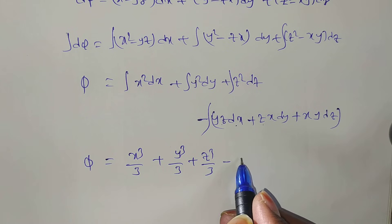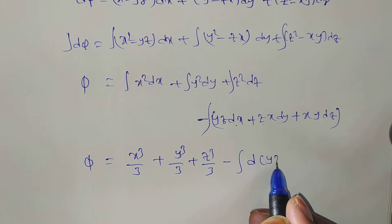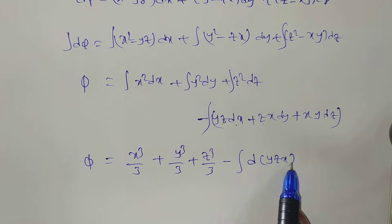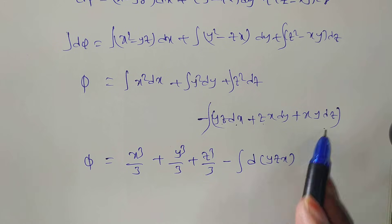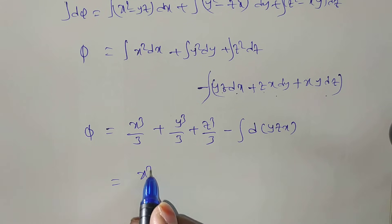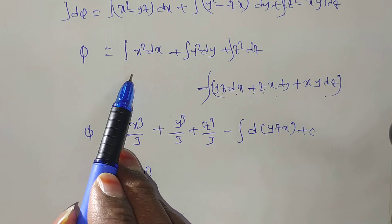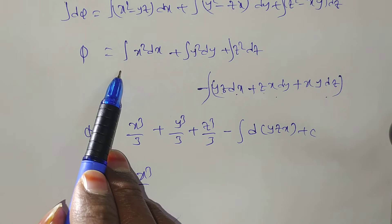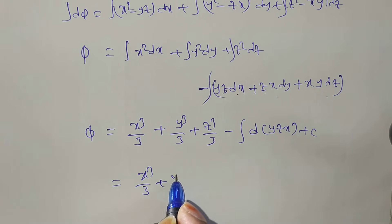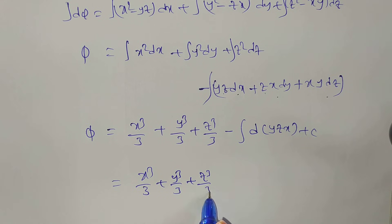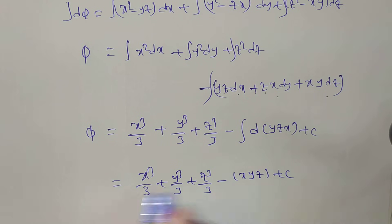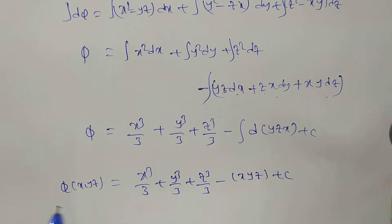We can write yz·dx + zx·dy + xy·dz as d(xyz), since d(xyz) = yz·dx + xy·dz + zx·dy. Therefore π(x,y,z) = x³/3 + y³/3 + z³/3 − xyz + c. This is the scalar potential function for the given problem.